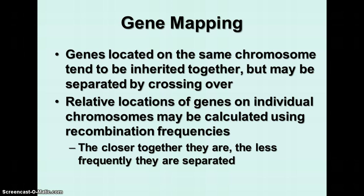The closer together genes are, the less frequently they're separated, and so the more frequently you see two genes or two traits expressed in the same individual, the closer they probably are together. If you see the traits separated, then they're usually farther apart. This is something we're not going to calculate in pre-AP biology, but in AP biology we'll do some calculation on those kinds of things. This just gives you an idea of how it works.